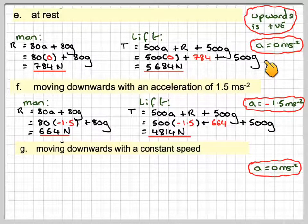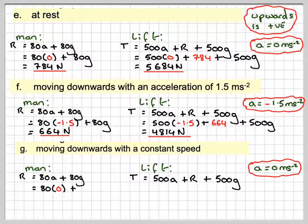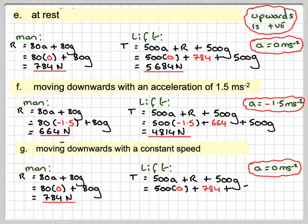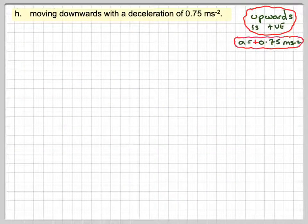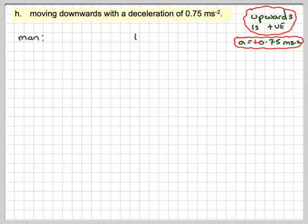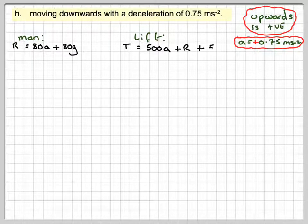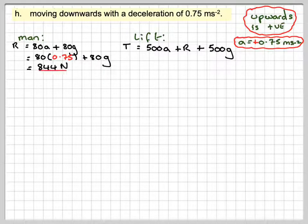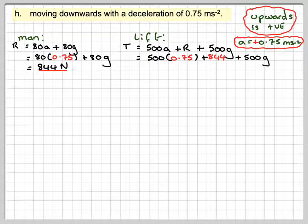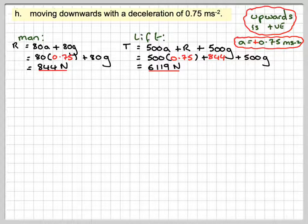Case 6: the lift moves downward at constant speed — this is the same as being at rest, so R equals 784 newtons and T equals 5684 newtons. Case 7: the lift decelerates while moving downward at 0.75 m/s². The deceleration acts upward, so a is positive 0.75. This gives R equals 80 times 0.75 plus 80g, which is 844 newtons, and T equals 500 times 0.75 plus 844 plus 500g, giving 6199 newtons.